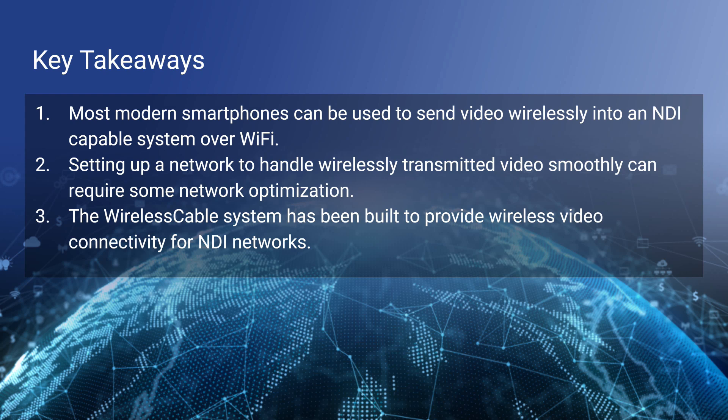Key takeaways: your modern smartphone can become a camera and wirelessly send video directly into your system. You can set up a network to handle wireless video transmission, but it will require a little bit of network optimization. A lot of people do struggle with high-quality wireless video over NDI, but as you can see, it works for us and we use it all the time. The wireless cable system is built to provide longer-length wireless connections for more important video production setups.